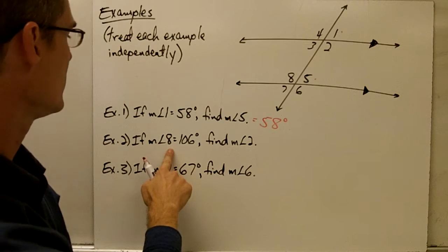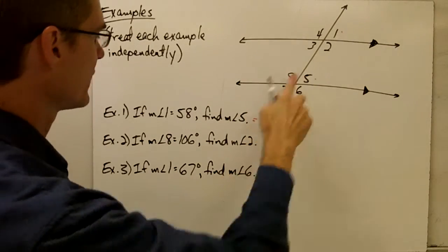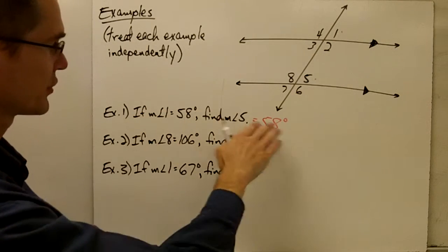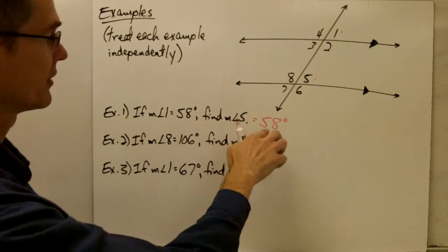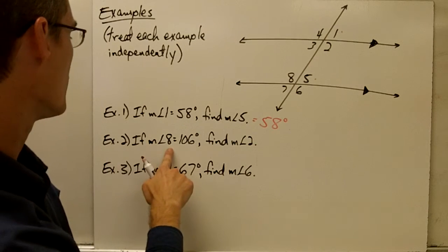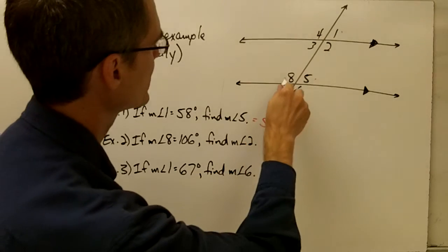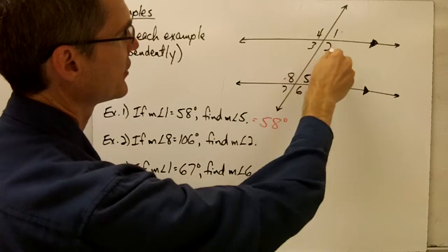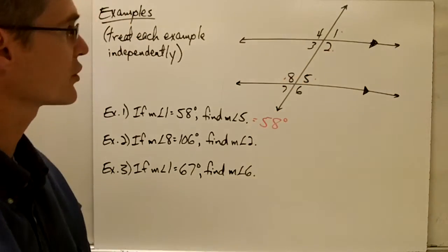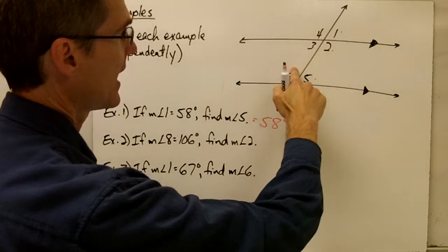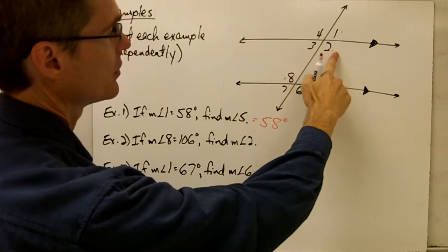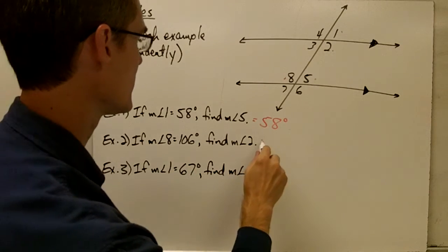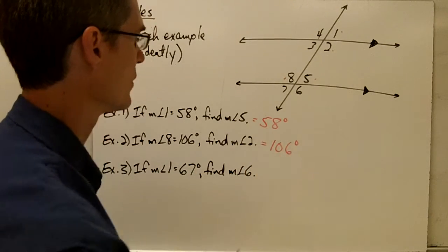Example two: if the measure of angle 8 is 106 degrees, find the measure of angle 2. Remember, we're treating this example independently from the first. Angle 8 and angle 2 are alternate interior angles. By the alternate interior angles conjecture, if two parallel lines are cut by a transversal, alternate interior angles are congruent. So if the measure of angle 8 is 106, the measure of angle 2 must also be 106 degrees.